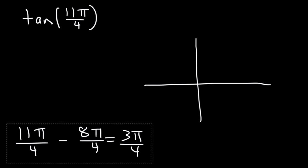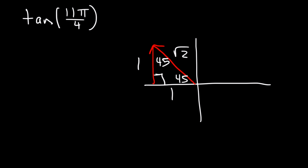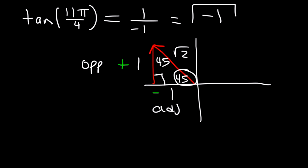The angle 3π/4 is in quadrant 2. Drawing the triangle in quadrant 2, the reference angle is π/4 which is 45 degrees, so we use the 45-45-90 triangle: sides 1, 1, and √2. In quadrant 2, x is negative but y is positive. Tangent of 11π/4 equals tangent of 3π/4, which is opposite over adjacent — that's 1 over negative 1, so the answer is negative 1. Recall that tangent is negative in quadrants 2 and 4.